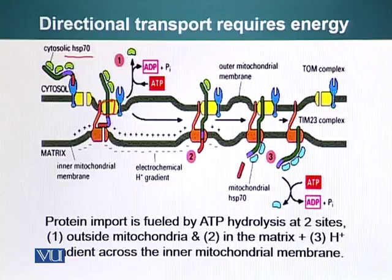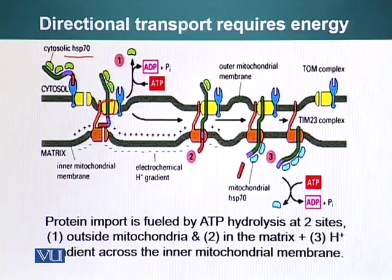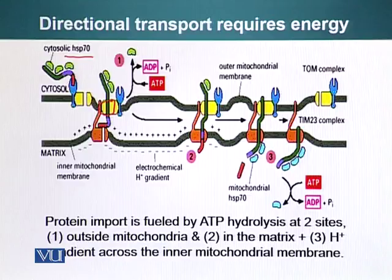When the protein has to be imported into the matrix part of the mitochondria, energy is required, provided by three factors. Outside the mitochondria, heat shock proteins keep the protein in an unfolded configuration. When the protein has to cross the inner membrane, two things help. There is a proton gradient — proton pumps in the inner membrane create a gradient, and the protein can be transported using that gradient, representing one way the mitochondria spends energy in importing proteins. Additionally, other heat shock proteins help move the protein into the matrix.